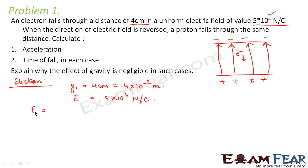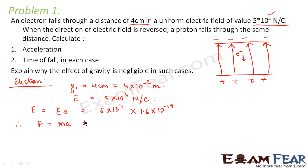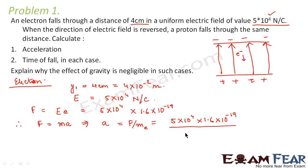By definition, the electrostatic force experienced by the electron is the electric field into the charge. The charge on the electron is 1.6 into 10 to the power minus 19 coulombs. So force is 5 into 10 to the power 4 into 1.6 into 10 to the power minus 19. From Newton's law, acceleration equals force divided by mass of the electron, which is 9 into 10 to the power minus 31 kg. This value comes out to be 8.89 into 10 to the power 15 meter per second square.